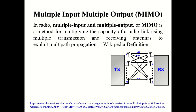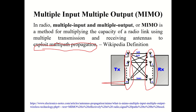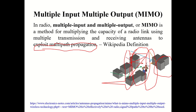MIMO stands for Multiple Input Multiple Output. The Wikipedia definition describes it as a method of multiplying the capacity of a radio link using multiple transmission and receiving antennas to exploit multipath propagation. The Tx side has multiple antennas and the Rx side has multiple antennas. Each Rx antenna receives signals from multiple Tx antennas, a channel matrix is applied, and data is decoded — achieving enhanced throughput through spatial multiplexing.